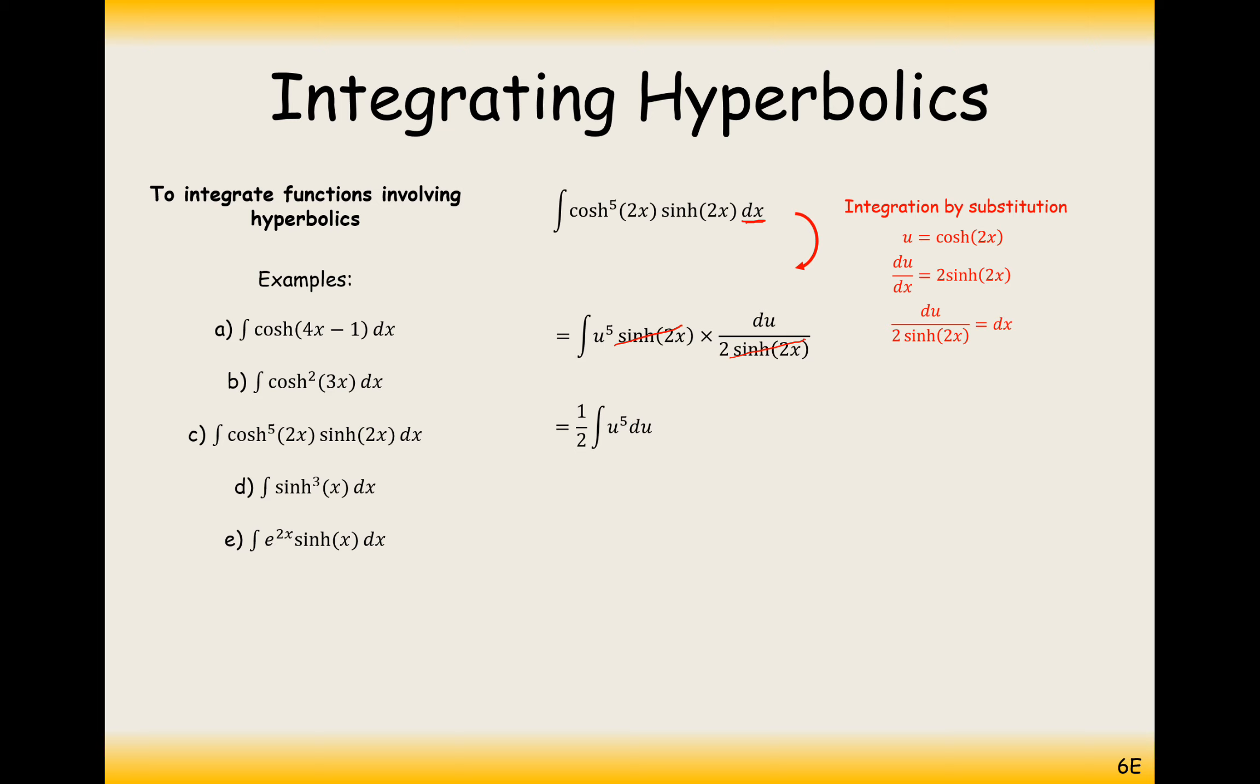The letters even match up there, which is really important. So it's going to be a half of 1 6th u to the power of 6 plus C. But never leave that as your final answer. If questions are in terms of x, your answer should be in terms of x. So put x back in and it'd be 1 12th cosh to the power of 6 2x plus C.